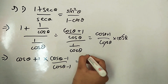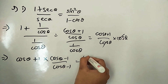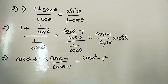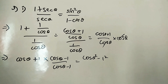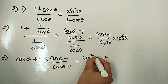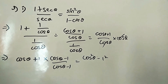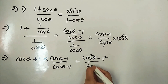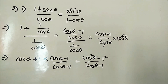Now (cos θ + 1)(cos θ − 1) in the numerator gives cos²θ − 1² = cos²θ − 1, using the (a + b)(a − b) = a² − b² formula. The denominator remains cos θ − 1. So we have (cos²θ − 1)/(cos θ − 1).